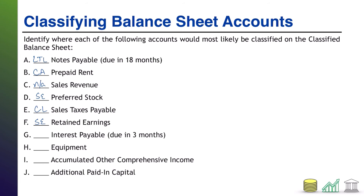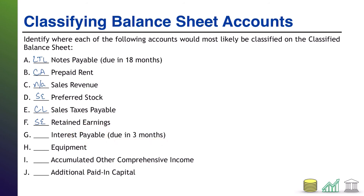Next up: interest payable, due in three months. Payable tells us that this is a liability. Due in three months tells us that it is within a year. Therefore, this is a current liability.